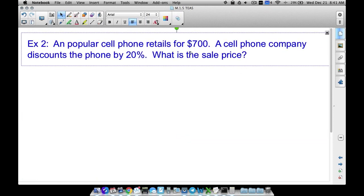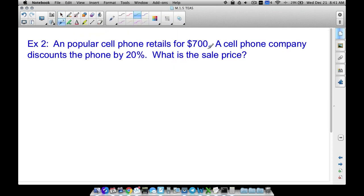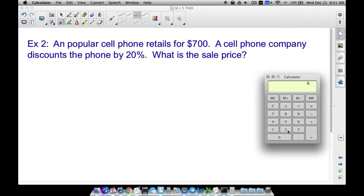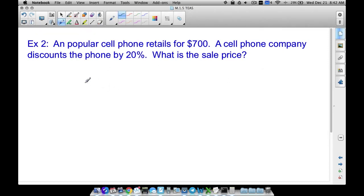Example number two: A popular cell phone retails for seven hundred dollars. A cell phone company discounts the phone by twenty percent. What is the sale price going to be? Well, the original price is seven hundred bucks. We want to find twenty percent of that, but we're not going to add it because the cell phone company is going to discount it. So we want to find twenty percent of seven hundred and subtract it. Twenty percent, that's going to be 0.20, times seven hundred, so one hundred forty—that's what the discount is going to be.